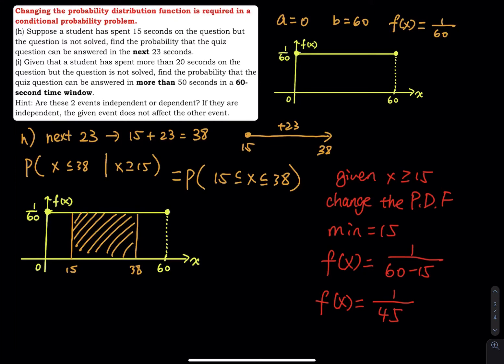So that is 1 over 45. So that means you have to change the 1 over 60 to 1 over 45. So that is the new height of the new height of the rectangle.